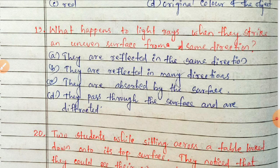When light rays strike an uneven, rough surface, they are reflected in many directions — that type of reflection is also known as irregular reflection. So the correct answer is option B.